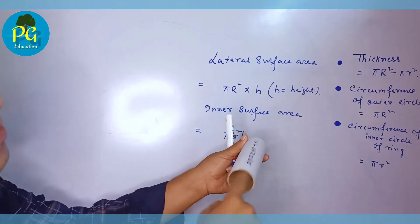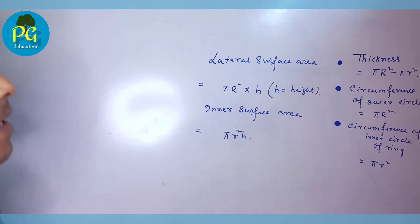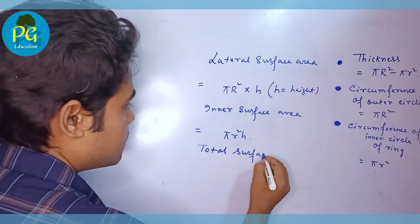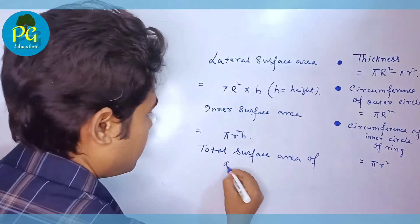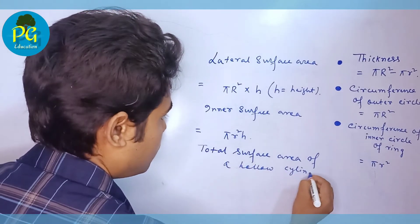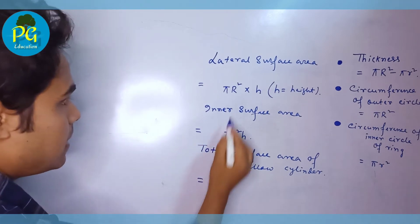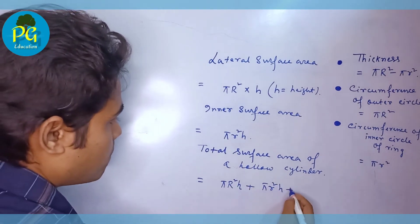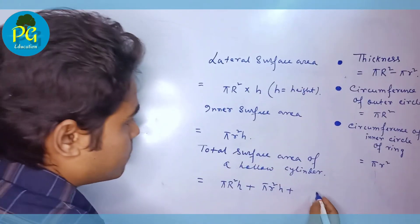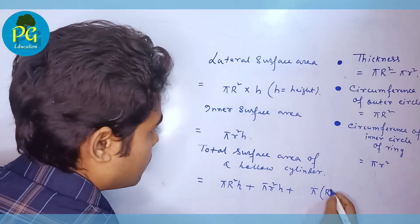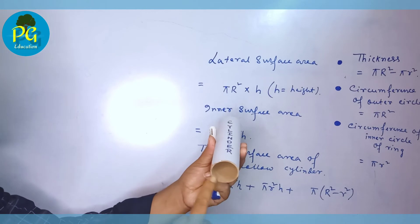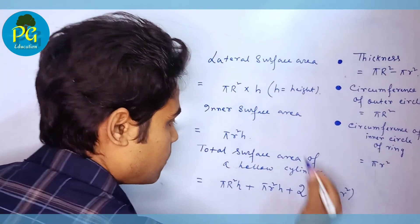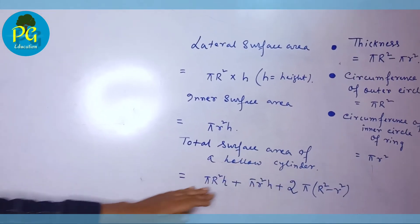If the question asks for lateral surface area plus inner surface area with the ring at both ends, that means total surface area. Total surface area of a hollow cylinder equals lateral surface area plus inner surface area plus the area of the thickness. At the bottom and at the top there are two rings, so we multiply the thickness area by two. This is the formula for the total surface area of a hollow cylinder.